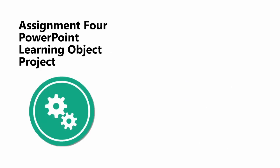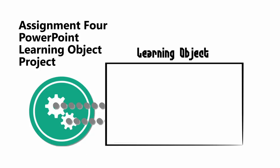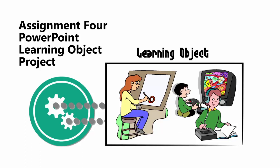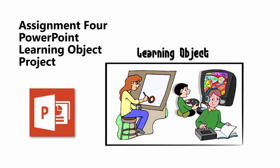The fourth assignment will be worth 15 points and will involve the use of elaboration or cognitive flexibility theory to construct a stand-alone instructional product known as a learning object. Through integrating digital resources such as graphics, audio, and video, you will build your learning object using PowerPoint. The learning object can also include website and web resources.